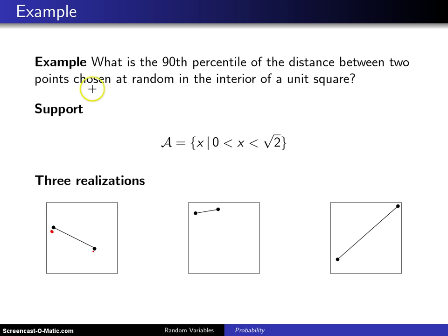Well the first question might be what is the random variable of interest here, and the random variable of interest is X, which is the distance between the two points.